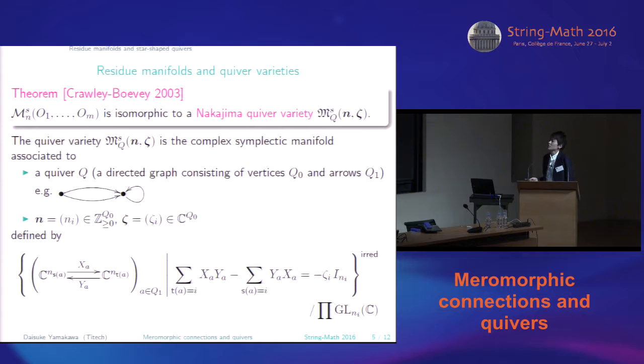So it's sometimes called the residue manifold. So Crawley-Boevey's result says the residue manifold is isomorphic to a Nakajima quiver variety. So what is the quiver variety? The quiver variety is some complex symplectic manifold. In fact, the hyperKähler manifold associated to a quiver, a directed graph. So it consists of vertices and arrows. And the border N.